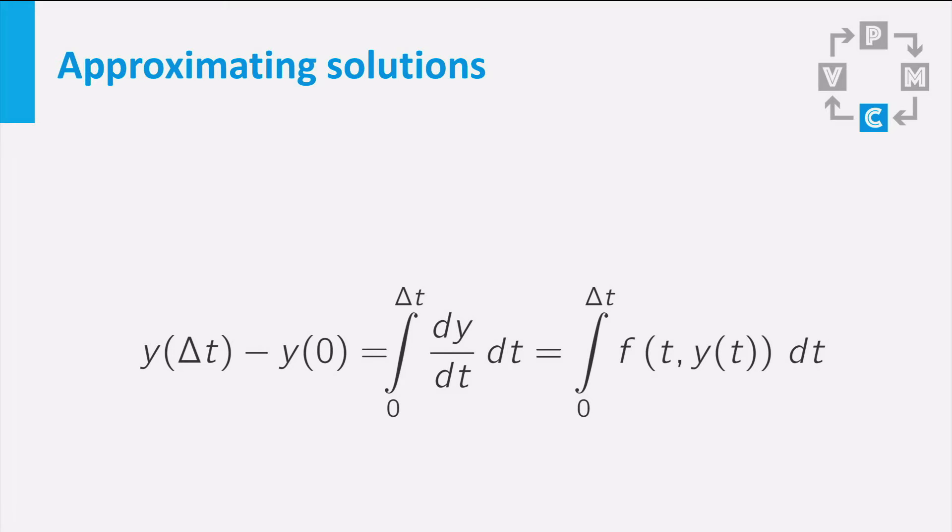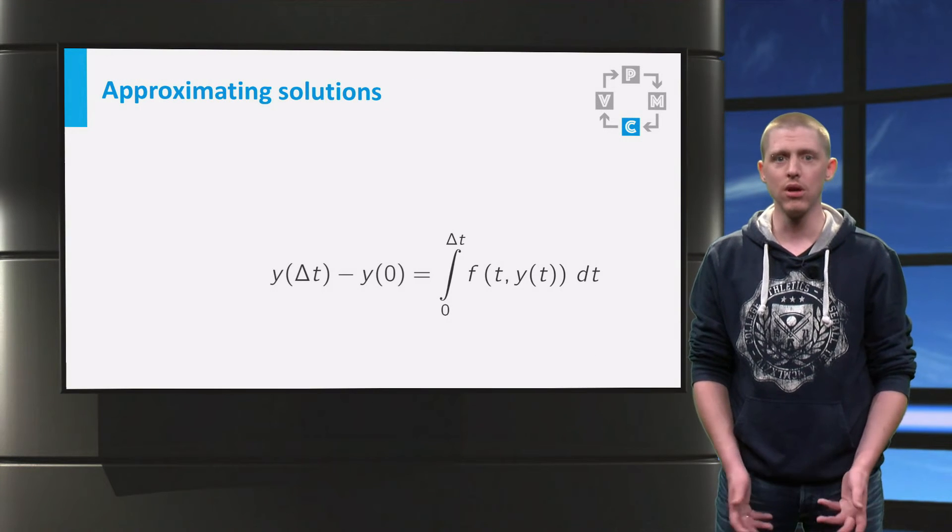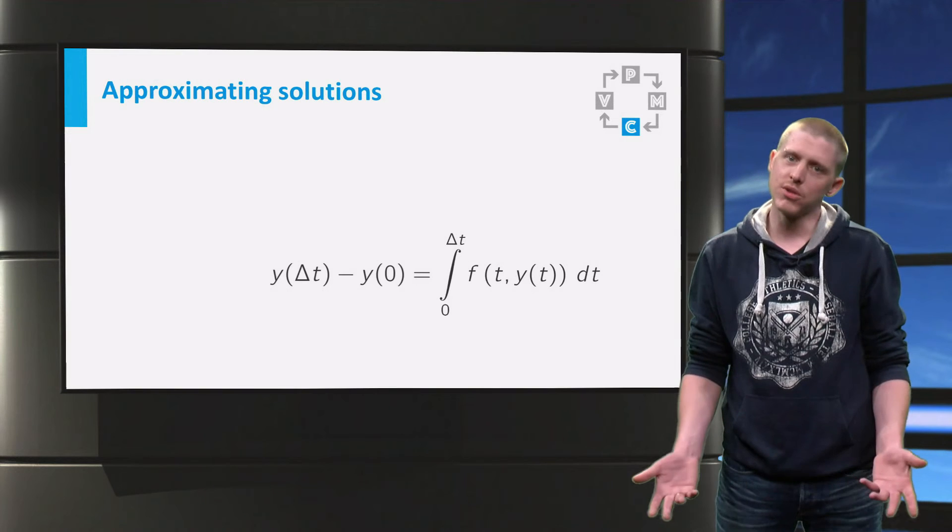We know the value of y at 0 because this is the initial value. The left hand side has become quite easy, but the right hand side still contains an integral. What should we do? If you want to integrate the right hand side function over time t, you must know the function y, but this is exactly the thing you do not know yet. So you must do something else.